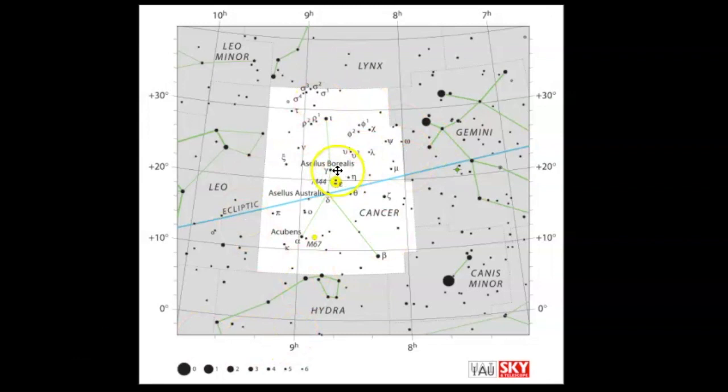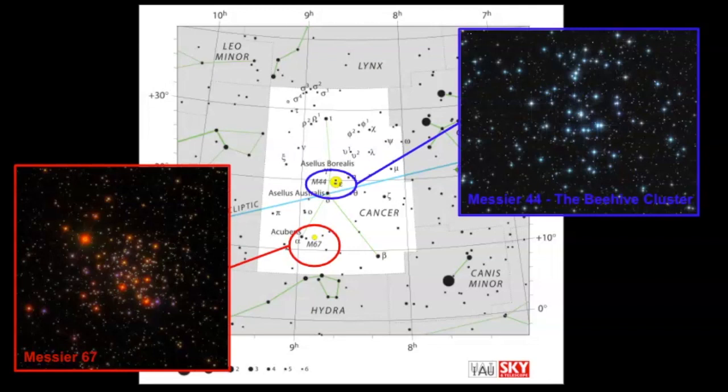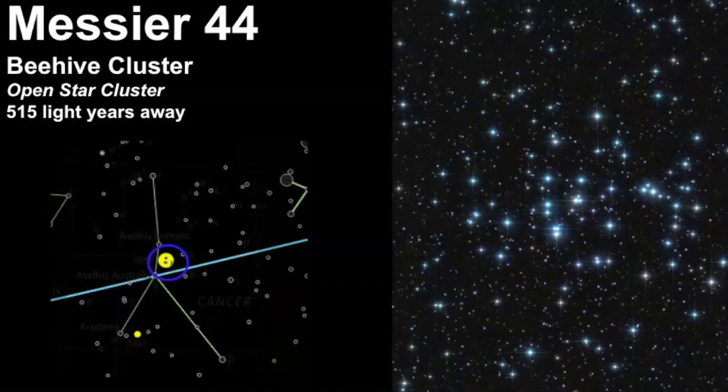If we take a look at the star map right here, here you have Cancer. Messier 44 is right in the middle of this rectangular boundary. There is another star cluster here known as Messier 67, which is also an open star cluster but it's not as bright as the Beehive Cluster. So let's take a closer look.